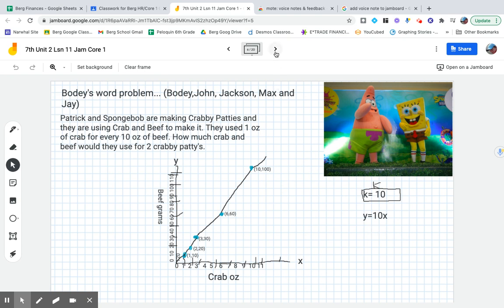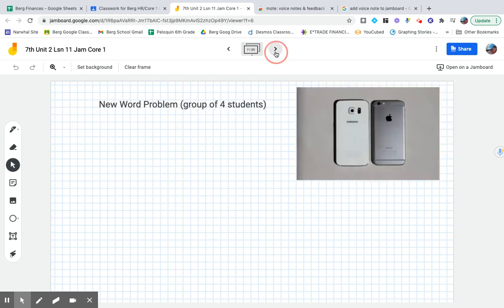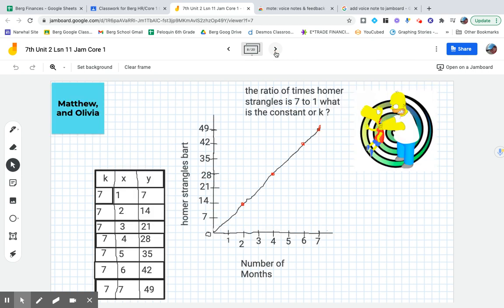Alright, the next word problem that you're gonna write an equation for is brought to you by Matthew and Olivia. The ratio of times Homer strangles Bart is 7 to 1. What is the constant or K? Well, you can see it in the table. The K is 7, that's very good. How would you write this equation for Y equals KX?